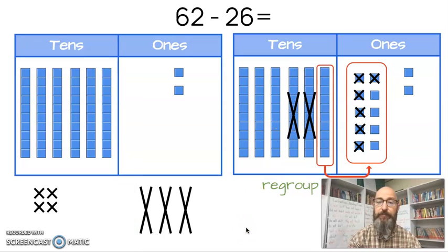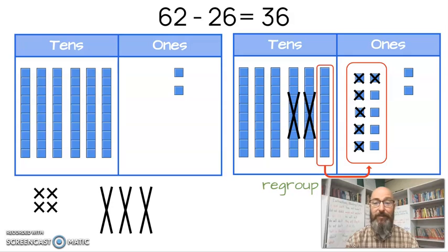Now we're going to count and see what I have left. Now we don't count the one in here because it's not there anymore. So let's count 10, 20, 30, 31, 32, 33, 34, 35, 36. So our answer should be 36.